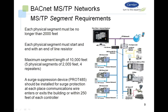Looking at MSTP segment requirements: each physical segment must not be longer than 2,000 feet and must start and end with an end-of-line resistor. The maximum segment length is 10,000 feet, which is five physical segments of 2,000 feet each connected with four repeaters. It's also recommended that anytime the bus enters or exits a building, a PROT485 or SIRT suppressor is installed. For critical devices interior to the building, installing a SIRT suppressor within 250 feet of that controller will provide protection.